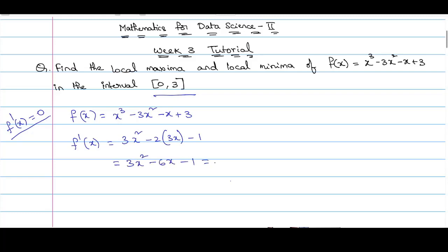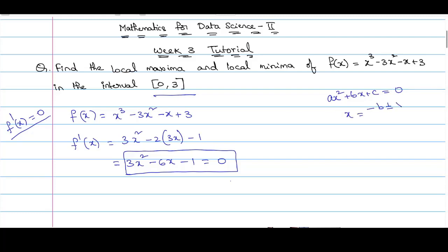Equating to 0, we get a quadratic equation. Recalling from the quadratic formula: if the equation is ax² + bx + c = 0, then the roots are x = (-b ± √(b² - 4ac)) / 2a.